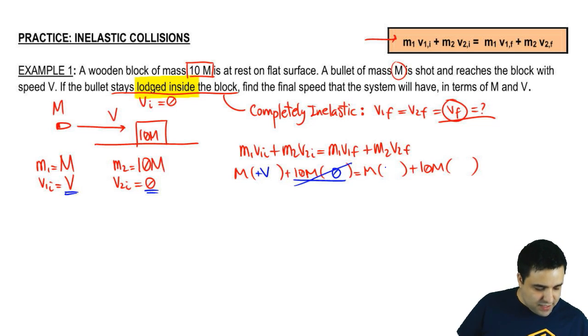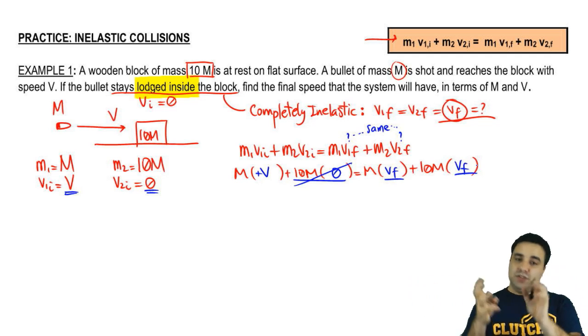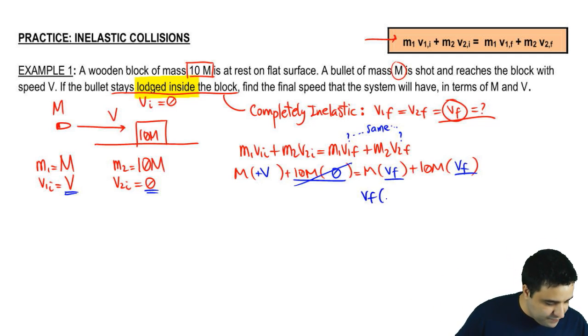The final velocity here, I don't have it. I don't have this guy and I don't have this guy, but they are the same. So I can write VF and VF, which means I can then combine the two masses. VF is M plus 10M, which is the value of 11M.